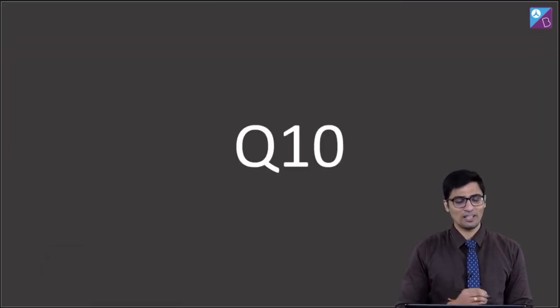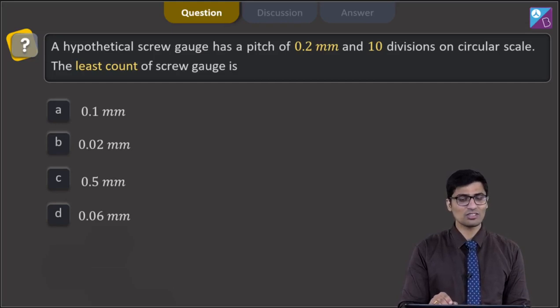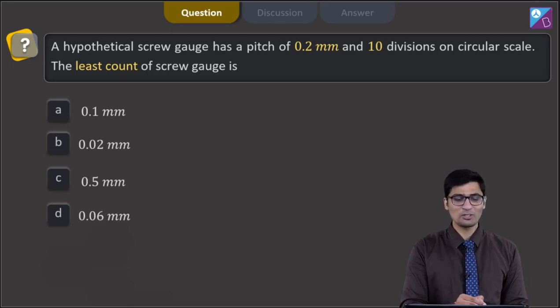This is question number 10. In this question, a hypothetical screw gauge has a pitch of 0.2 mm and 10 divisions on circular scale. The least count of the screw gauge is, and the 4 options are 0.1 mm, 0.02 mm, 0.5 mm or 0.06 mm.